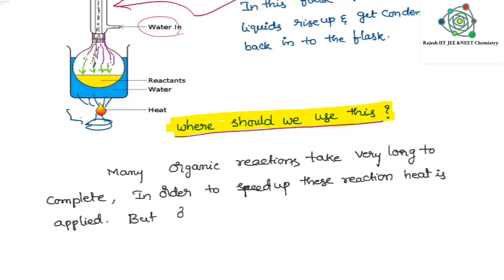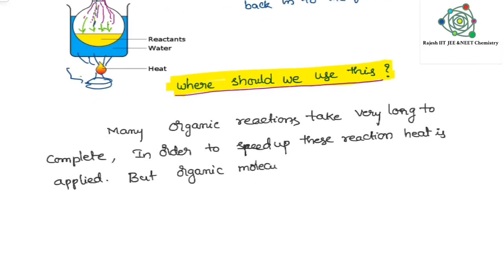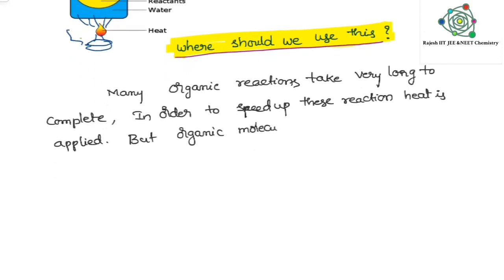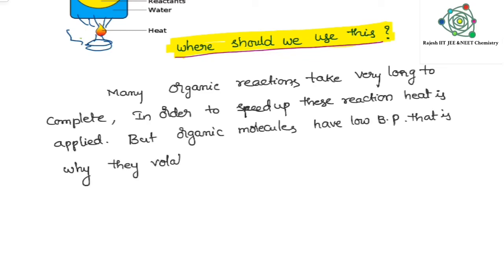To speed up the reaction we use heat. But whenever you heat organic compounds, a problem arises — organic compounds have low boiling points. Due to this low boiling point, they get volatile easily. So the reaction is slow, but if you heat it, organic compounds get volatile and evaporate easily.